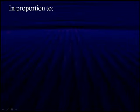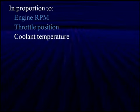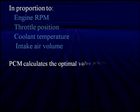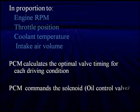If we can correct fuel delivery at the right time, we can do the same thing for variable valve timing. We simply do it in proportion to engine RPM, throttle position, coolant temperature, and intake air volume. The PCM takes all of these calculations and determines the optimal valve timing for each driving condition. Then the PCM commands the solenoid — the oil control valve. This oil control solenoid is really critical because it's subject to clogging when people fail to service their vehicle and change oil properly.